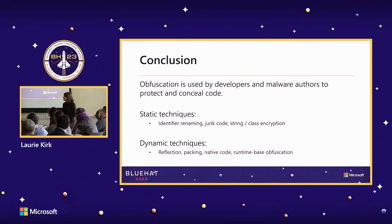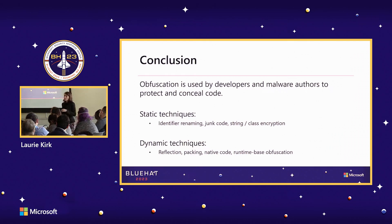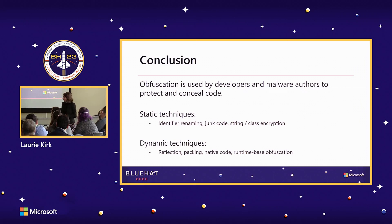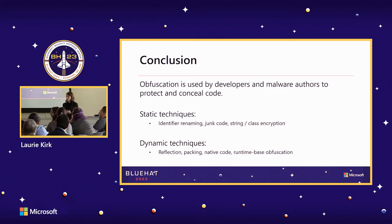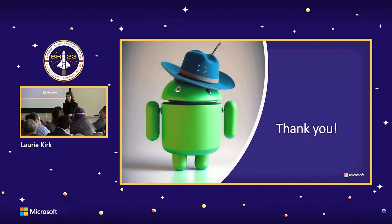In conclusion, obfuscation is the process a developer — either legitimate or malicious — might use to conceal code and hide underlying sensitive data from reverse engineers. The static techniques covered were identifier renaming, junk code insertion, and string or class encryption to hide sensitive data on disk until runtime. The dynamic techniques were packing (decrypting and decompressing dynamic code and loading it into the runtime), native code (writing part or all of your application in C or C++), and runtime-based obfuscation (an application modifying its own runtime state while executing). Thanks so much, and I hope you all learned a little bit more about obfuscation.